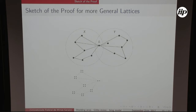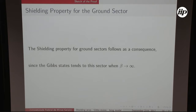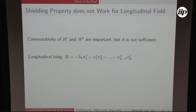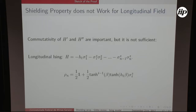As the Gibbs state tends to the ground state when temperature goes to zero — beta tends to infinity — this property also works for ground states. This is a property of the transverse Ising model specifically. As a counter-example, if you have a Hamiltonian with a longitudinal field in the same direction as the interactions and apply a magnetic field at the first site of a chain, the reduced state of the last site is dependent on that magnetic field. So this property is special to the transverse Ising model.